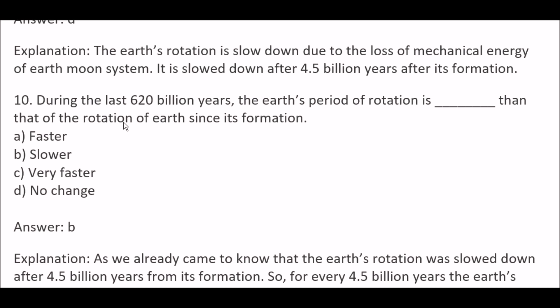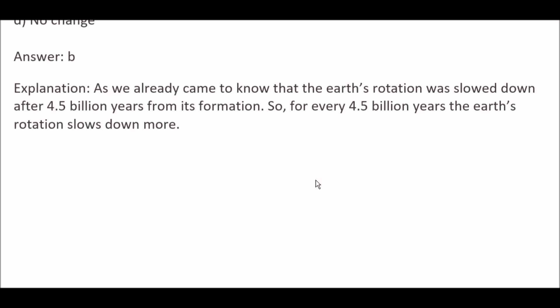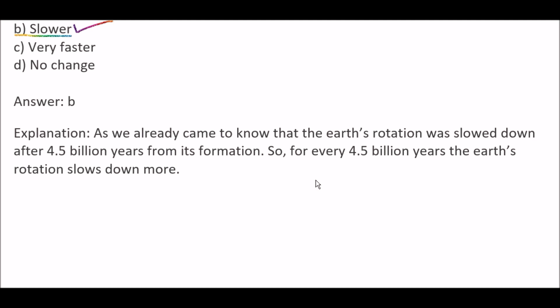Next question: During the last 620 million years, the Earth's period of rotation is blank compared to the rotation since its formation — Option A, faster; Option B, slower; Option C, very faster; Option D, no change. Right answer is Option B, slower. As we already know, Earth's rotation slowed down after 4.5 billion years from its formation, and for every subsequent period the Earth's rotation slows down more.